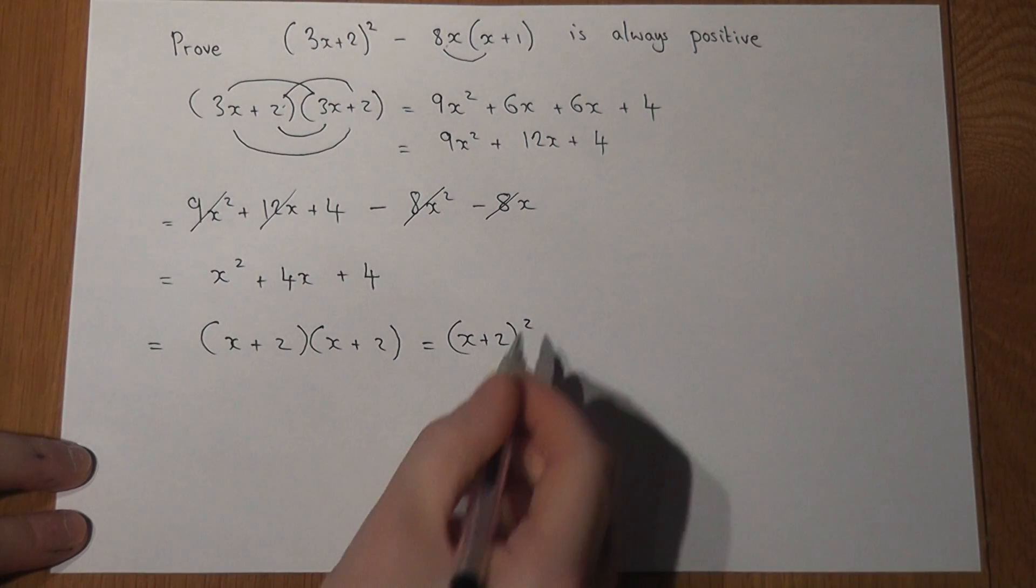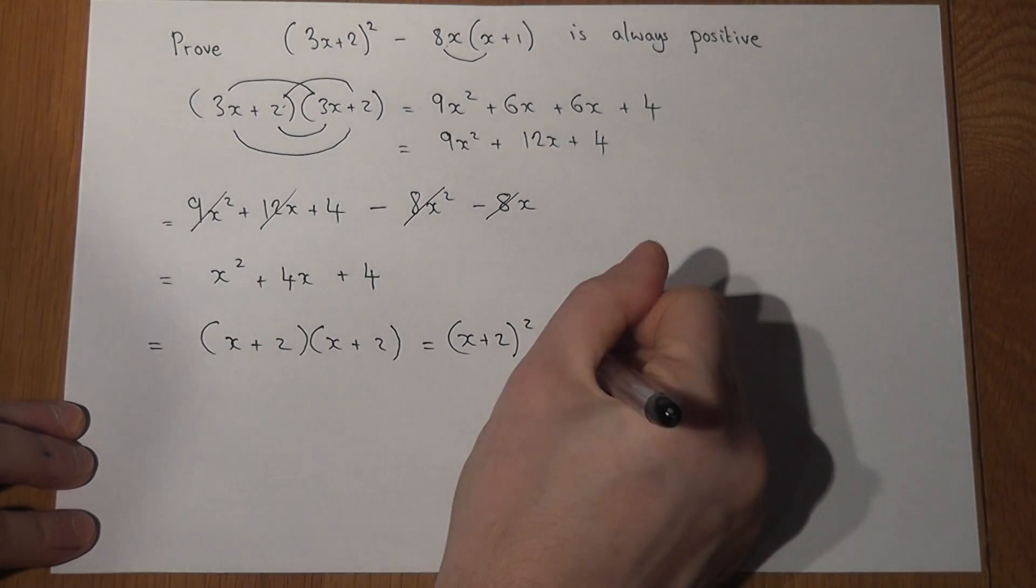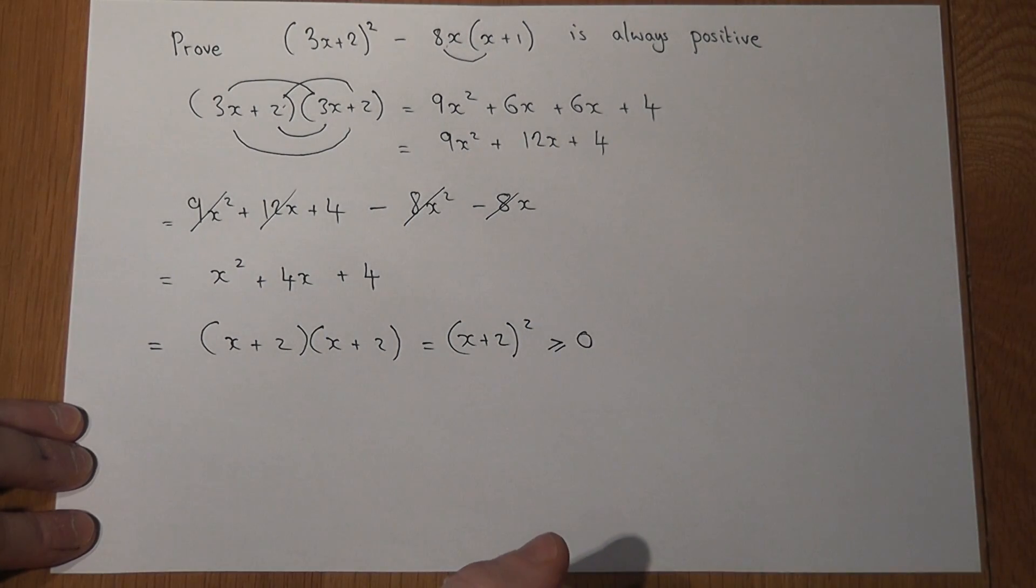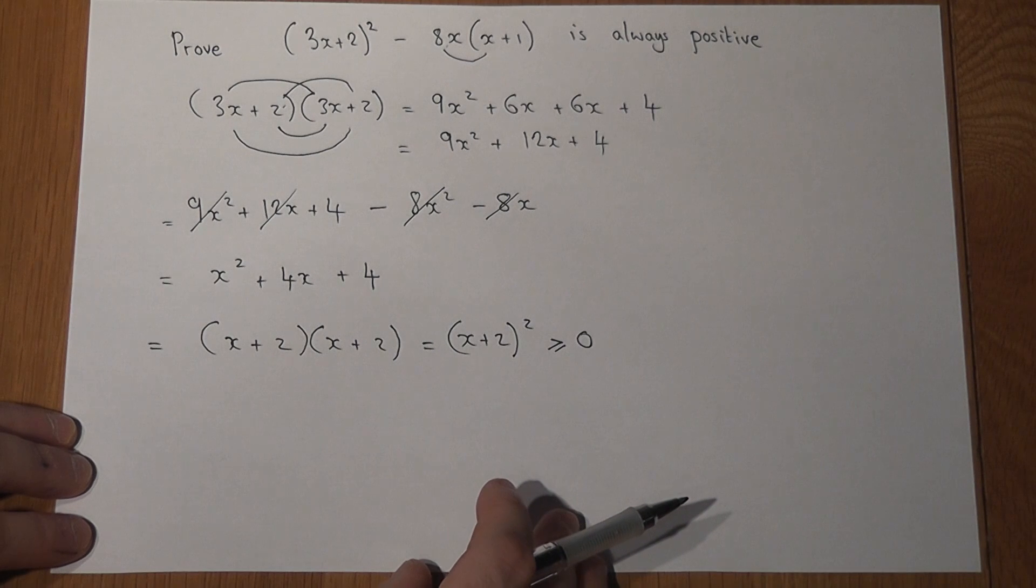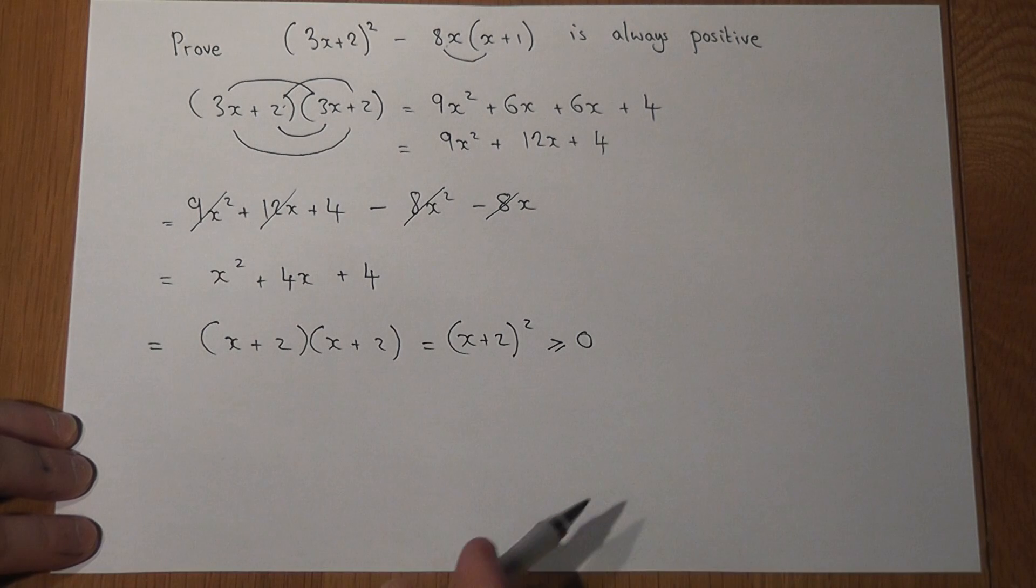Well anything squared is always positive. So x plus 2 squared must be greater than 0. So we've therefore proven the statement. Because again anything squared has got to be positive.